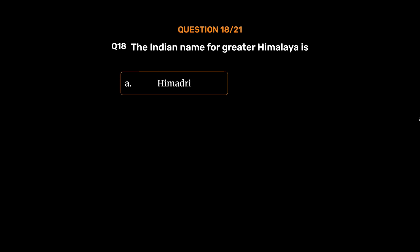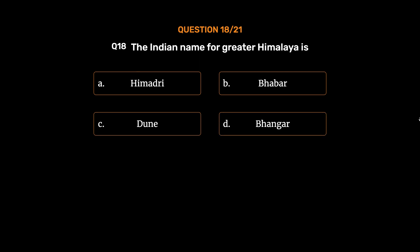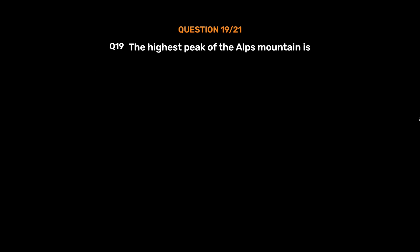Question number 18: The Indian name for the Greater Himalaya is — Option A: Himadri. Option B: Bhabar. Option C: Dune. Option D: Bhangar. The correct answer is Option A, Himadri.